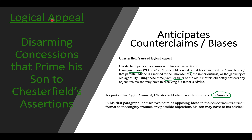What Chesterfield is doing here is a logical appeal. He wants to disarm his son with concessions that prime the son to Chesterfield's later assertions. He says he knows the advice of old age is often seen as unwelcome, morose, and imperious. This anaphora allows him to get his son to buy in — he anticipates his son's counter. If he begins with 'listen, I need you to remember this,' the son might roll his eyes. But by saying 'I know you don't want to hear it,' he disarms him.